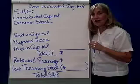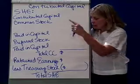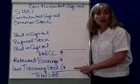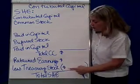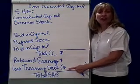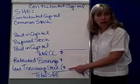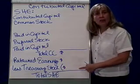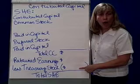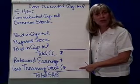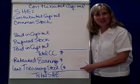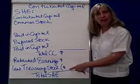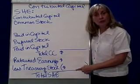Where do those treasury stocks show up? The very last thing in a stockholders' equity section would disclose how much is held as treasury stock. The number here is the number of shares times the cost — in other words, what did the business pay for those shares in the open market? So treasury stock equals number of shares times the cost.